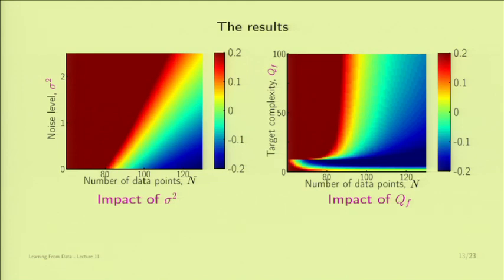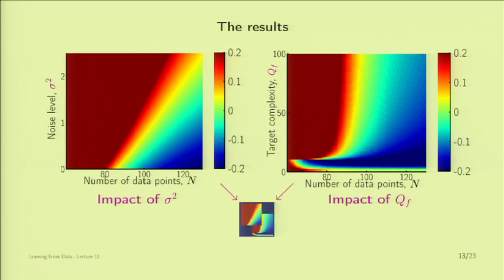There are two things to derive from these figures. First, there seems to be another factor besides conventional stochastic noise that affects overfitting, and we want to characterize it. Second, these plots provide a nice visual logo for the course.